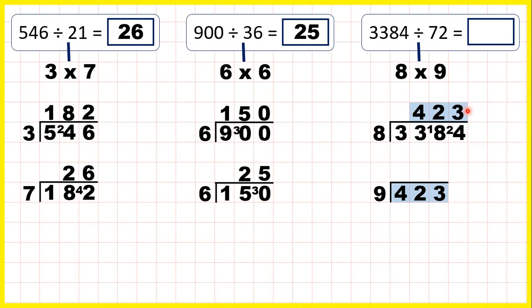So we can take our answer and divide it by the other factor. Now taking the first two digits together, 42 divided by 9 is 4 remainder 6, and 63 divided by 9 is 7. So our answer is 47.